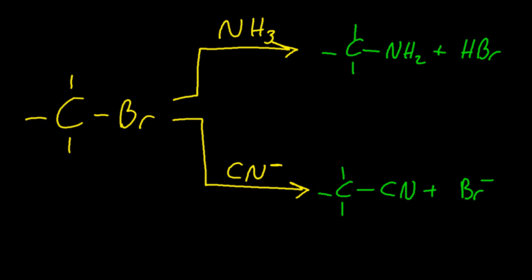An ethane nitrile is what's made when you add the cyanide. So all you've just got to do is swap out the two things. It's a substitution reaction.